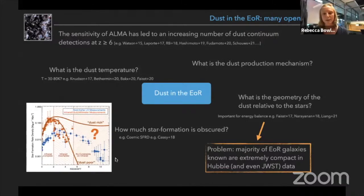And the problem with understanding this question at very high redshifts is that the majority of galaxies we know of at redshift seven or so are extremely compact in Hubble data, and even with James Webb they're going to be barely resolved.